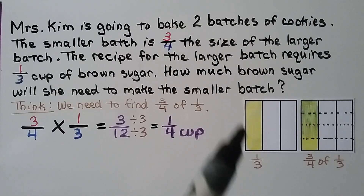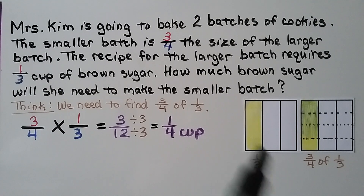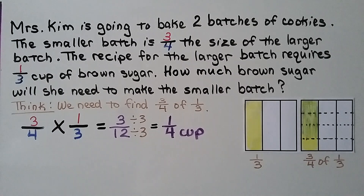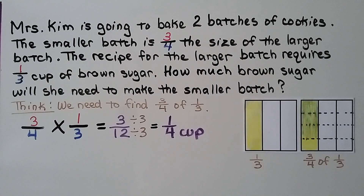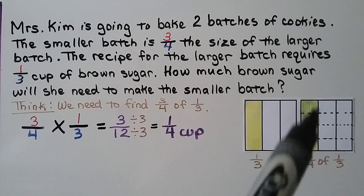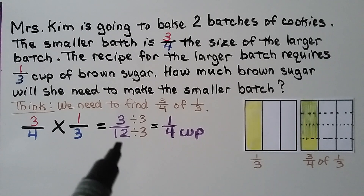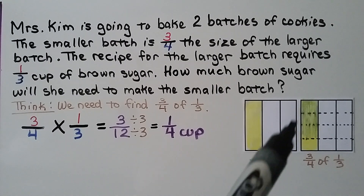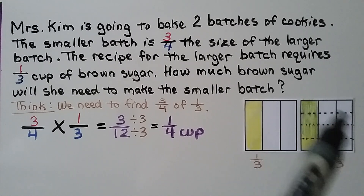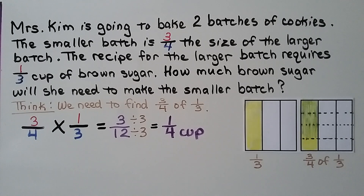We shade in one-third of a model and then divide the model into four parts, giving us twelve parts total. We shade in three of those four parts — that's three-twelfths — with three of the twelve parts shaded twice.